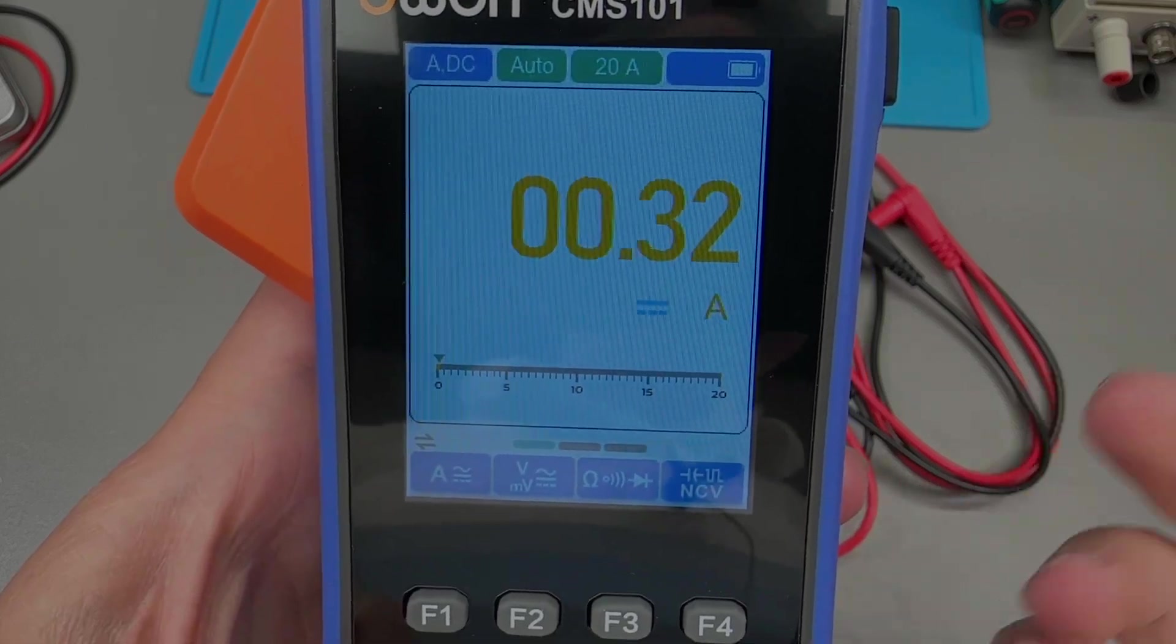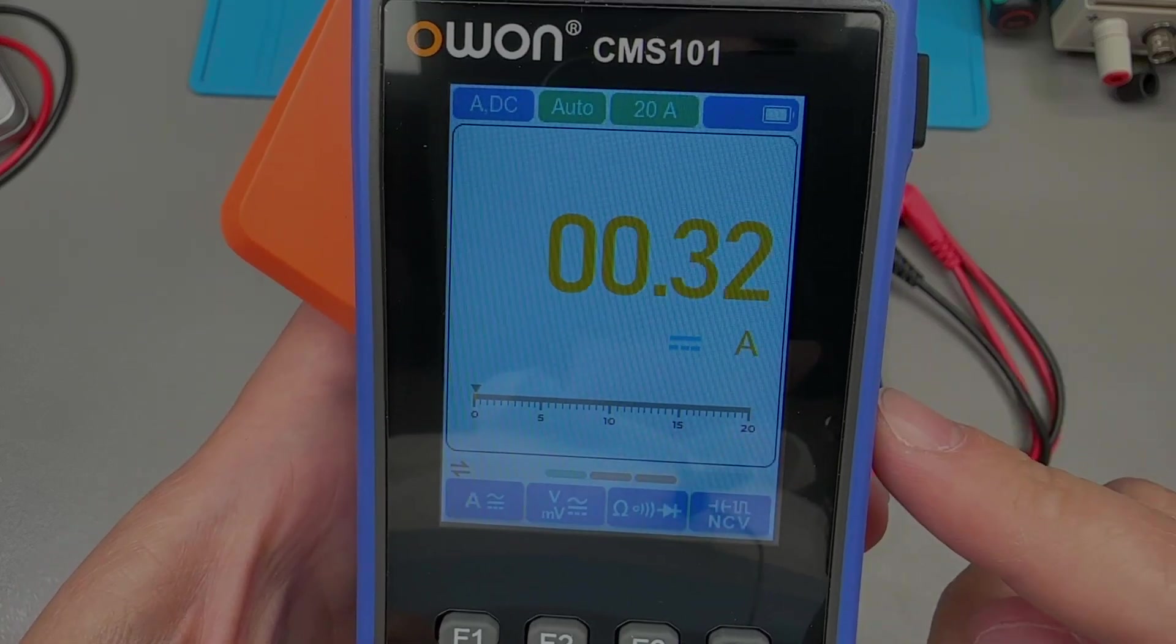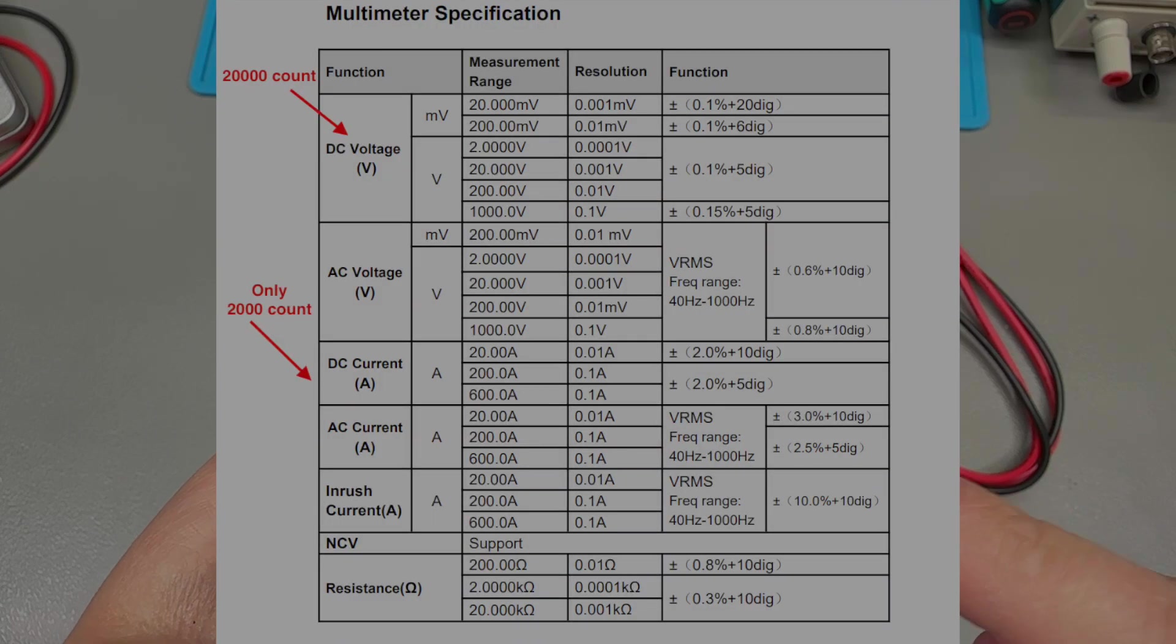resistance, capacitance, frequency, duty cycle, diode, and also includes a non-contact voltage detector function. And generally this is rated as a true RMS 20,000 count meter, but that counts figure only applies to the voltage measurement, while the current measurement, as you can see here, is actually a 2000 count measurement.